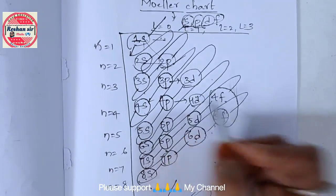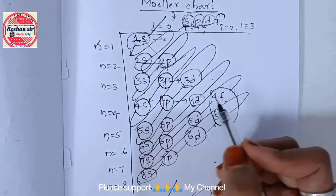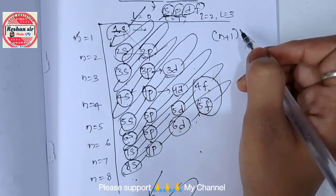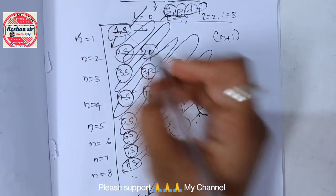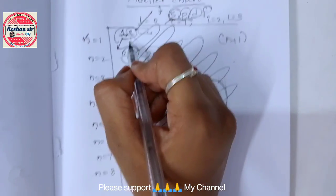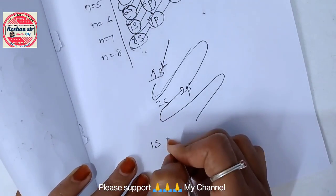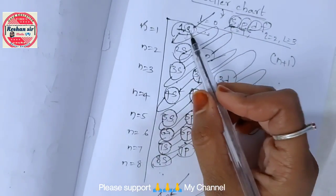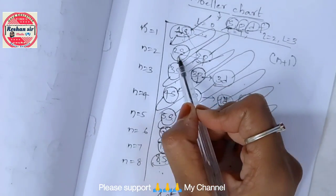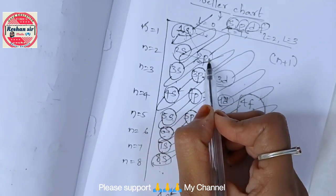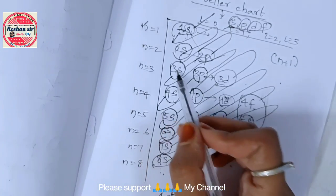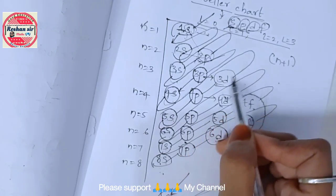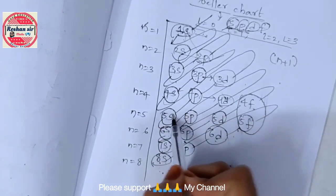From this diagram you can see how it is increasing the value of n plus L in ascending order of energies. Now you have to write ascending orders. First what we have is 1s, ascending means lower energy.